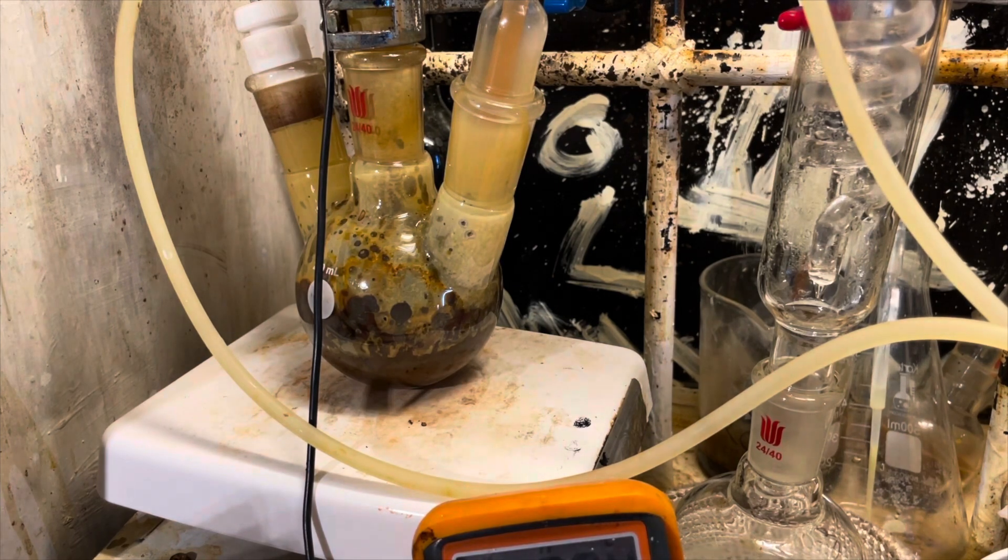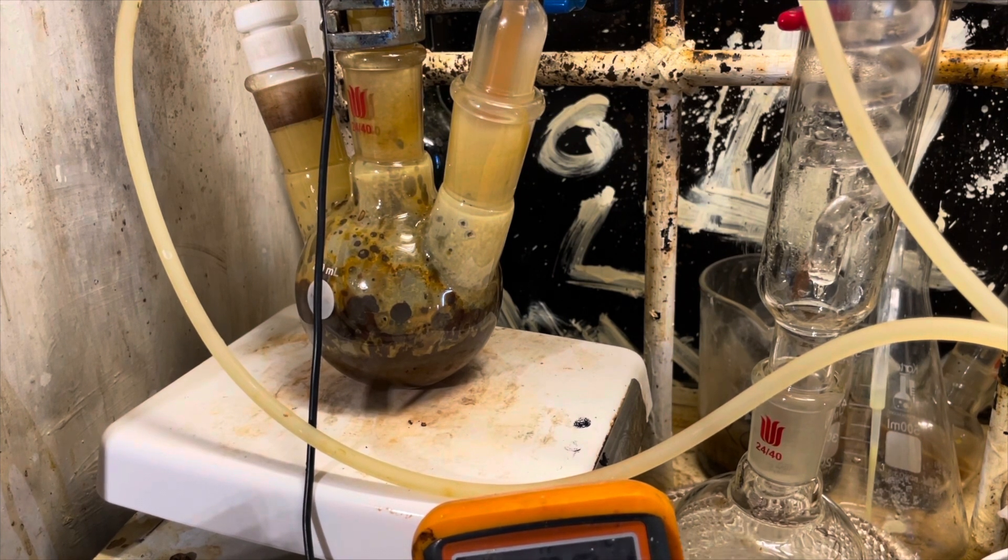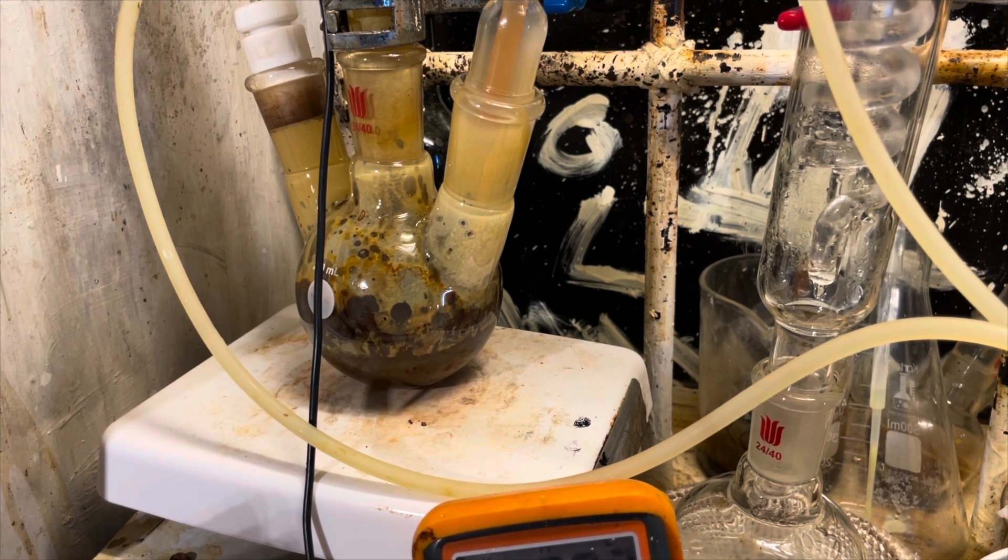Now, what I did end up doing to determine the endpoint is put pH paper over the condenser, and you can see it's blue, which means the ammonia is no longer being absorbed into the reaction. So I considered it done then.